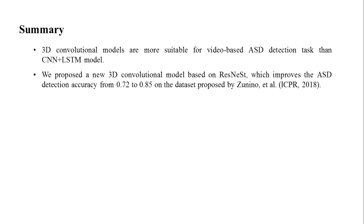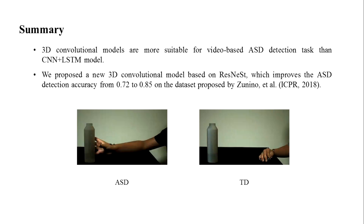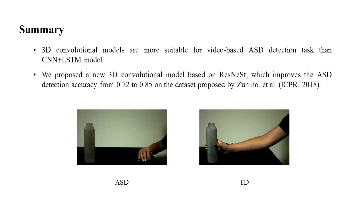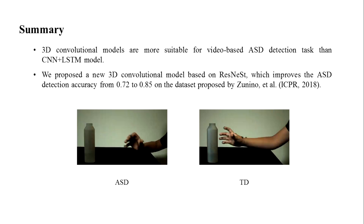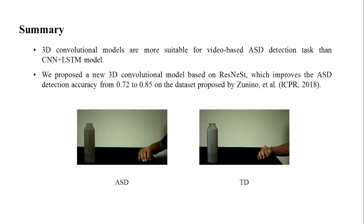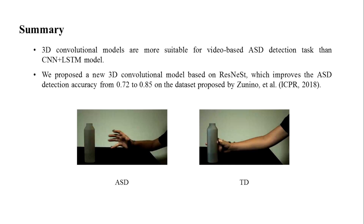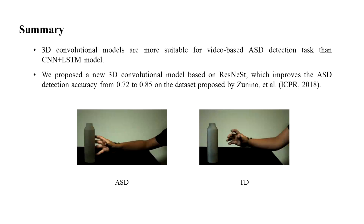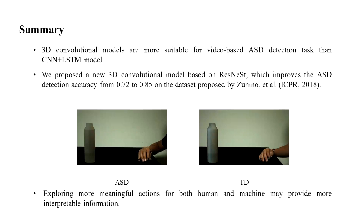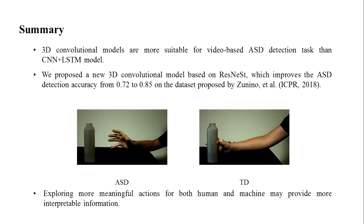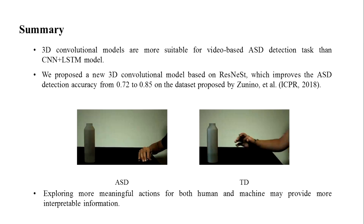I also noticed a problem with the ASD detection task. Looking at the sample videos again — the left is ASD and the right is typically developing — it's hard to distinguish the difference between the two. Therefore, it's hard to explore why some cases fail. It may provide more interpretable information if we can explore more meaningful actions for both human and machine understanding.